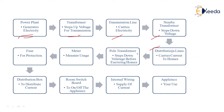From the distribution line, the current comes to the pole transformer — the pole in front of our bungalow, flat, or apartment — which steps down the voltage again before entering homes, because the voltage required at home is much less than what is generated at the plant. From the pole transformer it then goes to our meter, which measures our usage and determines our electricity bill.